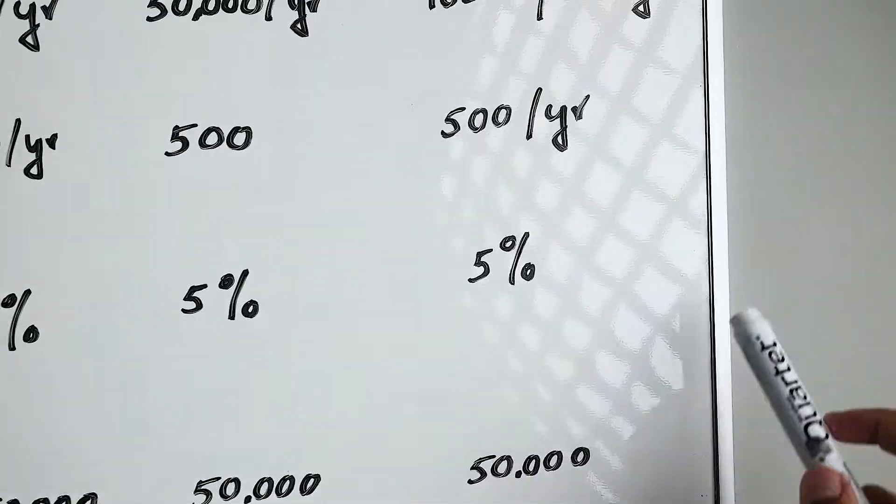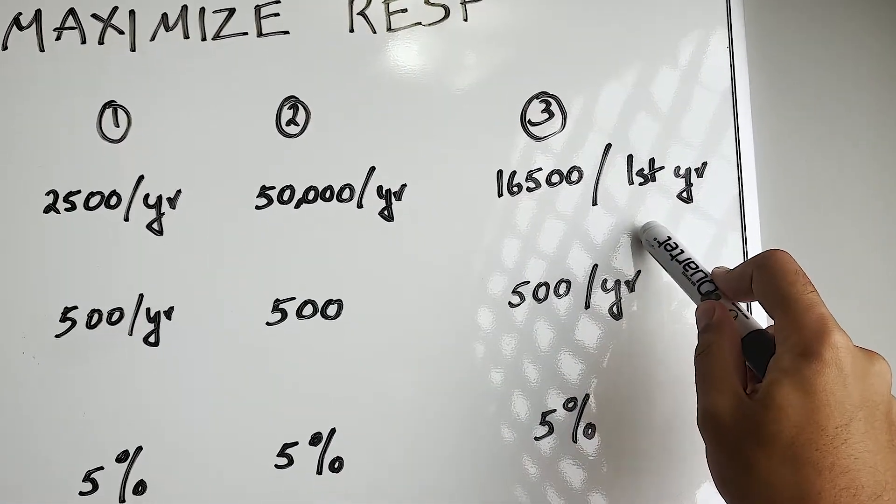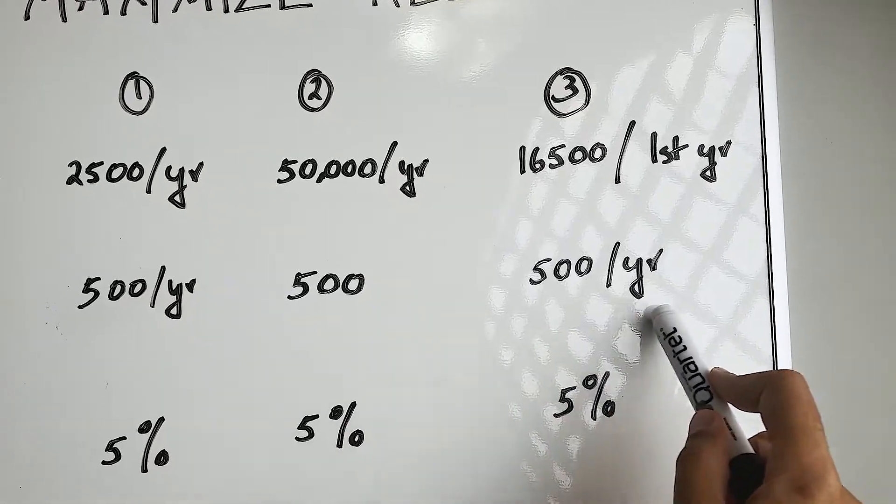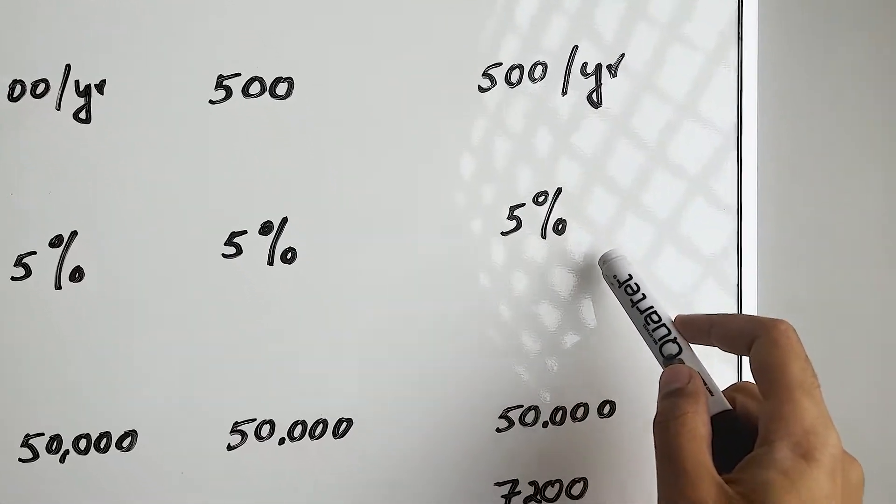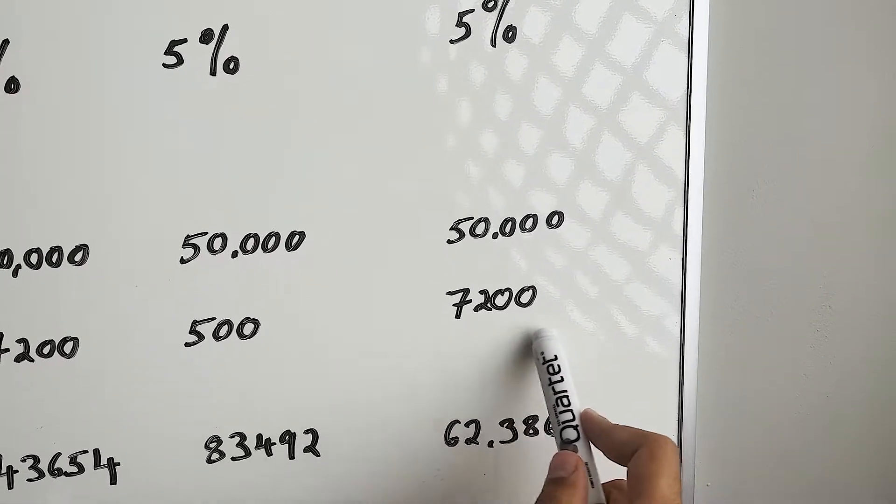Now let's look at the third scenario here. We are contributing $16,500 in the first year and getting $500 from the government grant every year. If we max our $50,000 contribution room, we can get $7,200 from government grants.